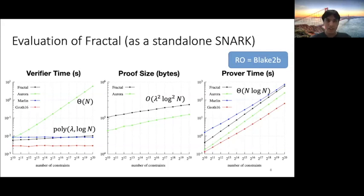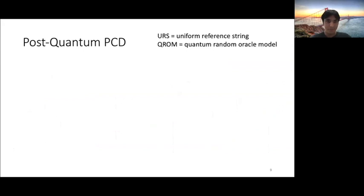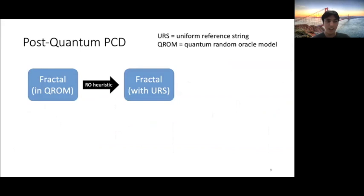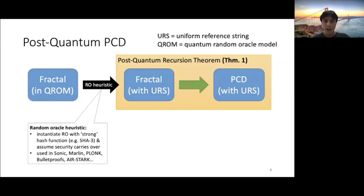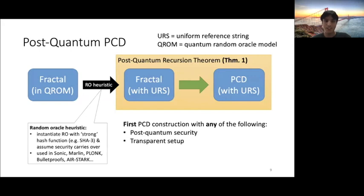So now we have a Fractal standalone SNARK. Let's look at how we get PCD. So we start with Fractal in the quantum random oracle model. Then we apply the random oracle heuristic to get Fractal in the uniform reference string. And the random oracle heuristic is instantiating the random oracle with a strong hash, and then assuming that security carries over. This is being used in increasingly many SNARKs, like Sonic, Marlin, Plonk, Bulletproofs, all of the post-quantum SNARKs, et cetera. And then we apply theorem one. So then from Fractal we'll get PCD. So this is going to be the first PCD construction with any of the following properties. Post-quantum security, a transparent setup, and support for arithmetic over any large smooth field, like binary fields and fields that don't support efficient elliptic curves, et cetera.